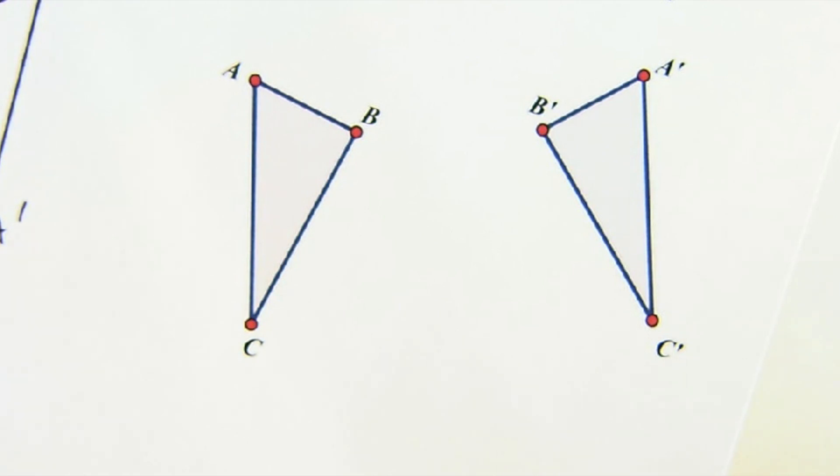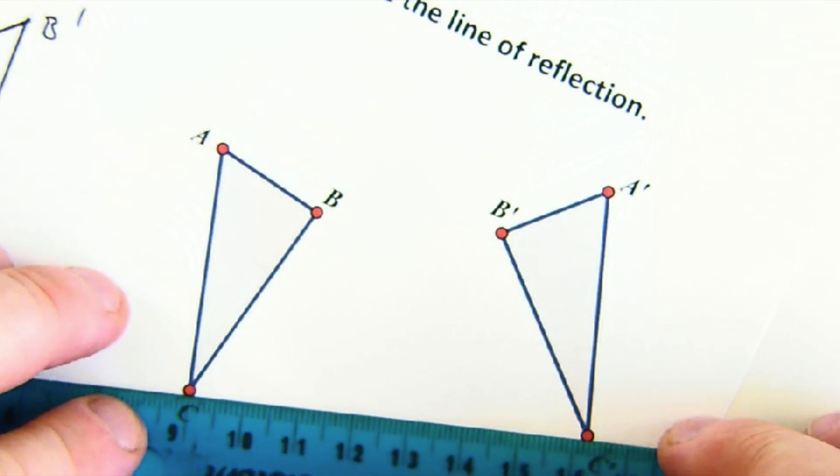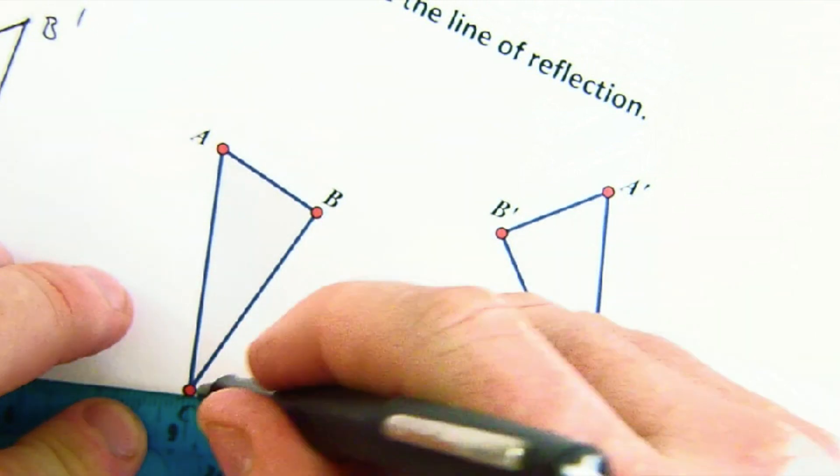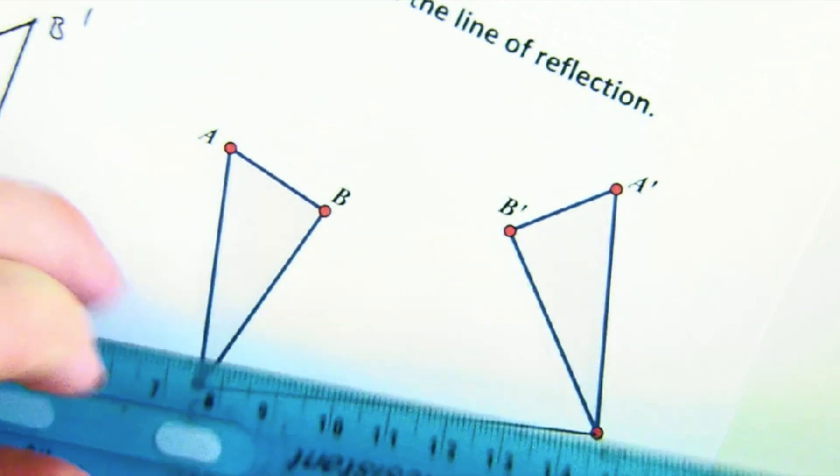And we are going to use something that we know. We know that our line of reflection has to be the perpendicular bisector of A, A prime, B, B prime, and C, C prime. It will be the same line for all of them.